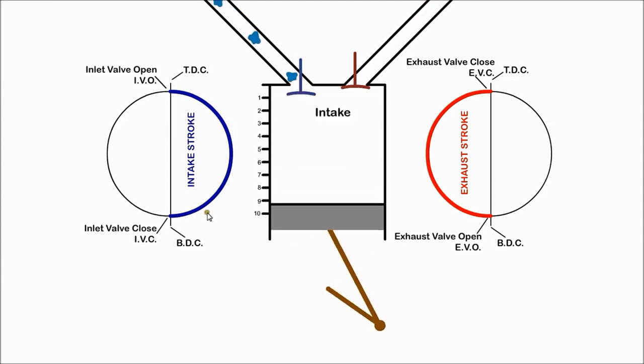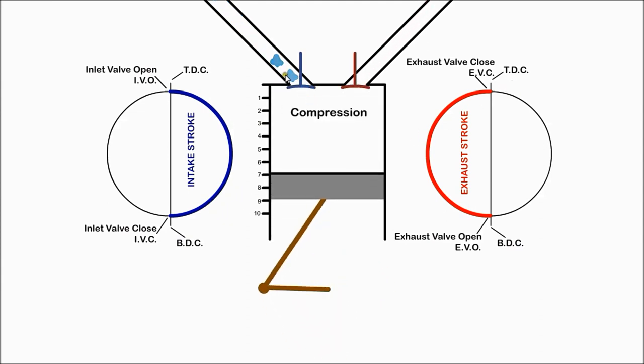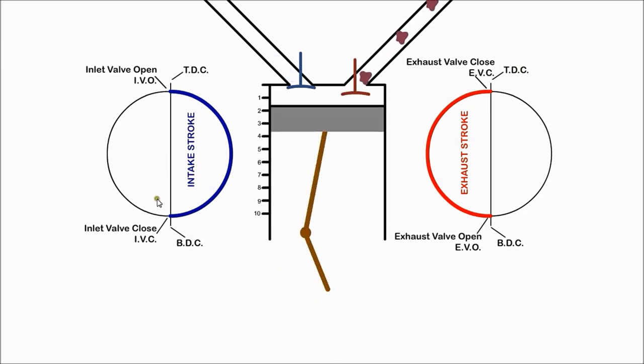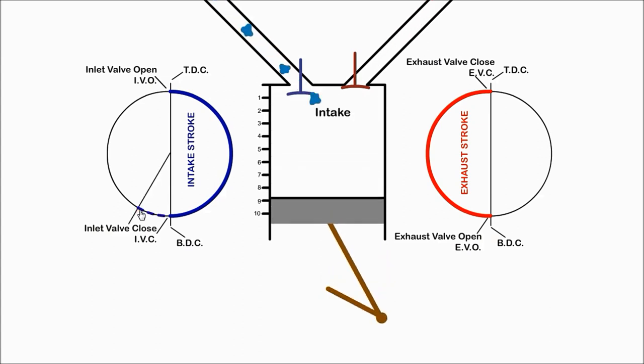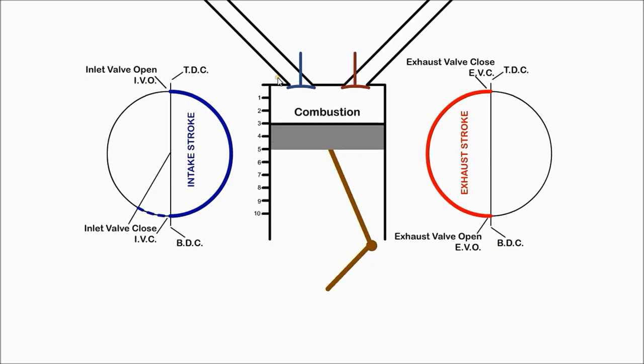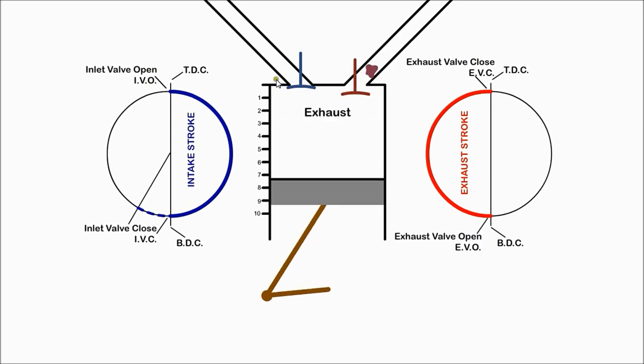If we look at the inlet valve closing at BDC, we see that a flow of air is blocked behind the valve from entering the cylinder. It would be much better to delay closing the valve until the increasing cylinder pressure stops the flow, then we get more air into the cylinder.